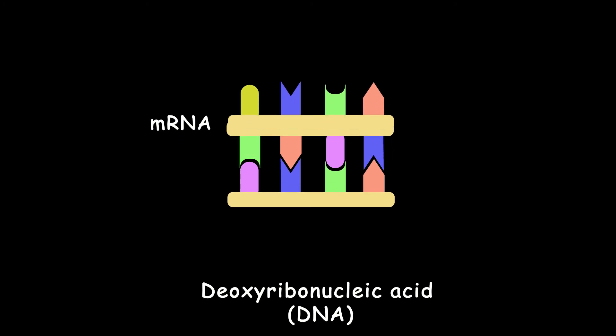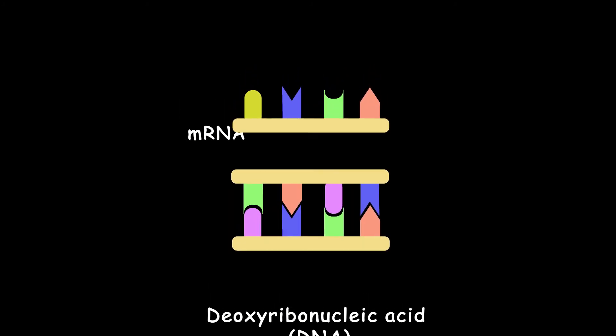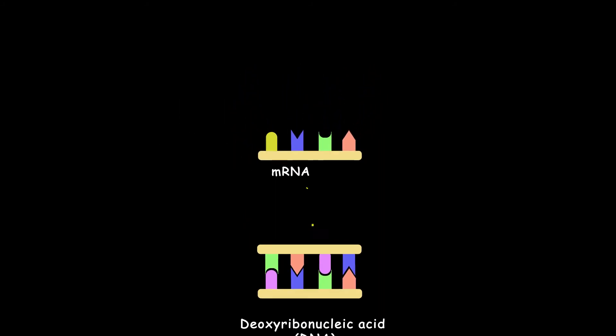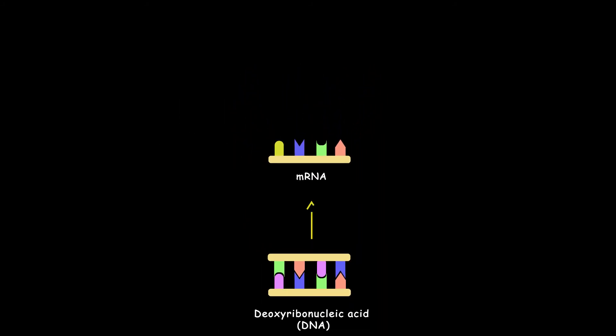An enzyme called RNA polymerase makes mRNA from this chain. Since the two chains in the DNA are complementary, the mRNA code would be exactly like the opposite strand. For simplicity, we call this chain the positive strand and this chain the negative strand.